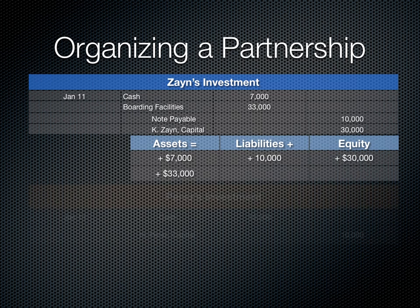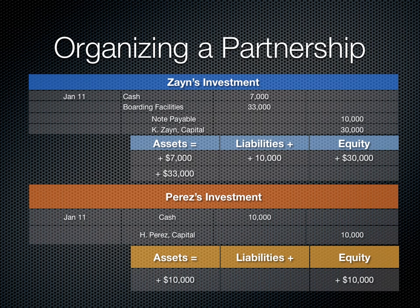Here are the journal entries. Zane puts up $7,000 cash plus the store location valued at $33,000 but with a $10,000 mortgage on it. So we debit $7,000 cash and debit the facility itself, then credit the mortgage as a note payable, which reduces Zane's capital contribution to $30,000. Next, Perez contributes $10,000 cash and has nothing else to contribute, so we debit cash and credit Perez's capital contribution.